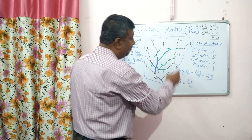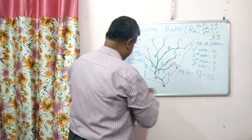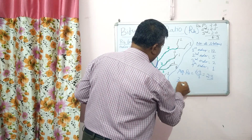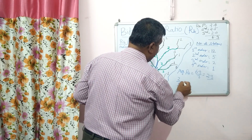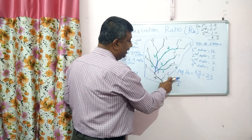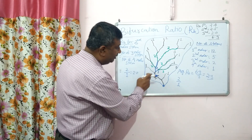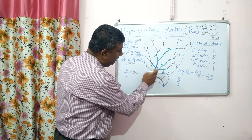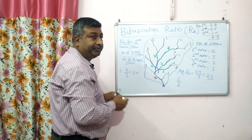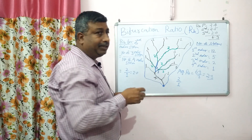Similarly for Rb of third order, it is 2, meaning 2 upon 1. This means when 2 third order streams meet, then one fourth order stream is formed. So it indicates the branching pattern.